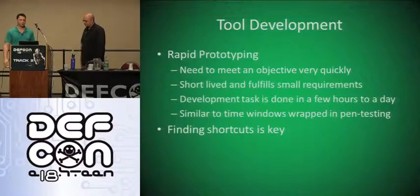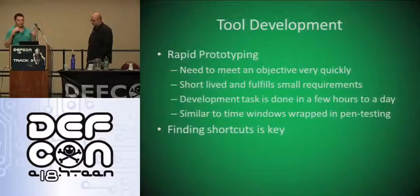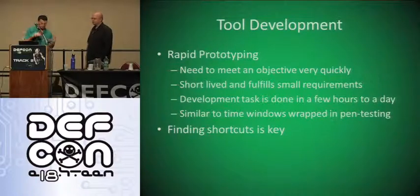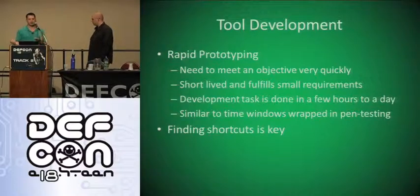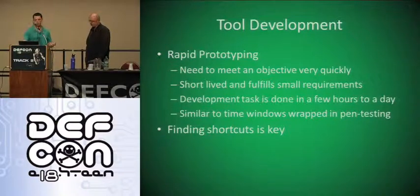So rapid prototyping — we've already emphasized this before. You need to meet an objective and you need to do it really quickly. It's often short-lived, it's timebox development. The idea is to find a task that's only going to take you a couple of hours, maybe even a day, and use that as one of your primary milestones. From there you try to identify as many shortcuts as you can possibly take — which means taking in open source software, looking for documentation and such.